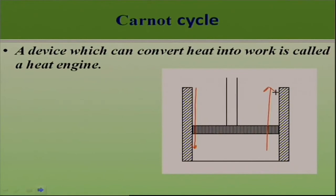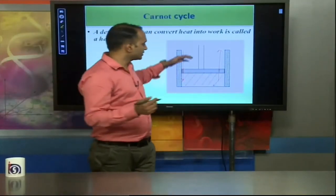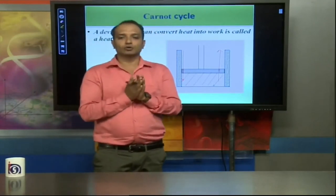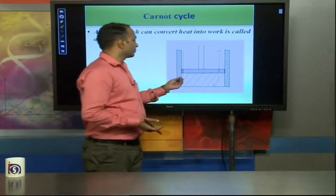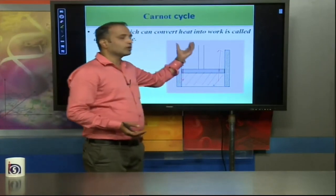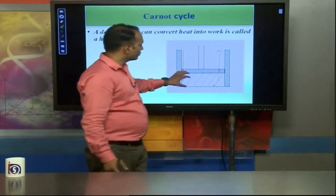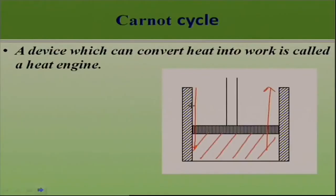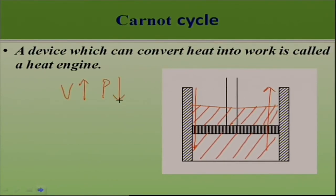When the piston level is moved downwards, the volume decreases and pressure increases. When the piston goes upwards, the volume value increases. If the piston reaches the top, the container has maximum volume — volume is increased and pressure is decreased. So we can say that when volume is increased, pressure is decreased, and when volume is decreased, pressure is increased.